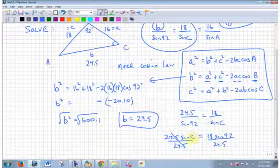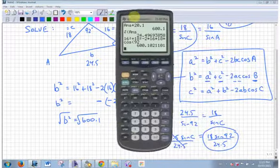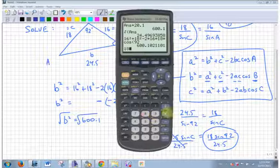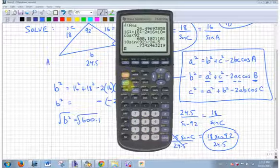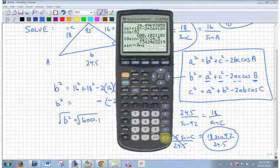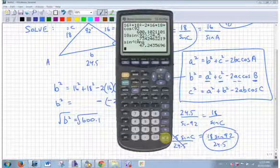And then I want to take the inverse sine of all that stuff. So what is that stuff? 18 times sine 92 divided by 24.5 is, that inverse sine of that will be the answer. Angle C, 47, let's just round it to the nearest degree, 47 degrees.